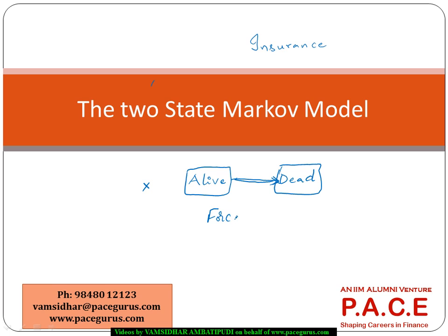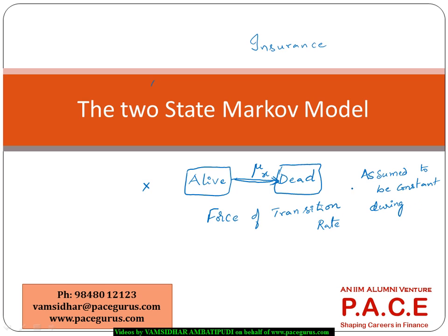We define the force of transition, also called the transition rate, which is denoted by mu_x. Generally, mu_x is assumed to be constant within one year — that is, during a one-year period. So whether the person is aged 55.5 or 55.7, the transition rate is assumed to be constant within that one-year period.